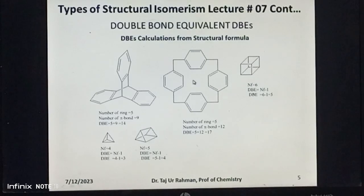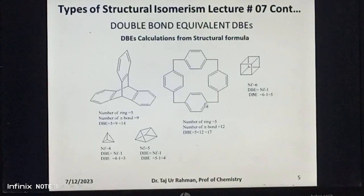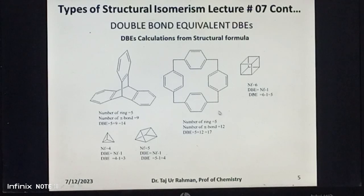One thing should be noted for this structure: it contains five rings, not four rings. Recall the definition from lecture number six — double bond equivalent is the sum of double bonds of all kinds and individual rings in a compound. In this structure, we have four benzene rings and one additional ring, so the total number of rings is five. The total number of pi bonds are three in each benzene ring. So the DBE value calculated for this compound using the above-mentioned formula is 17.